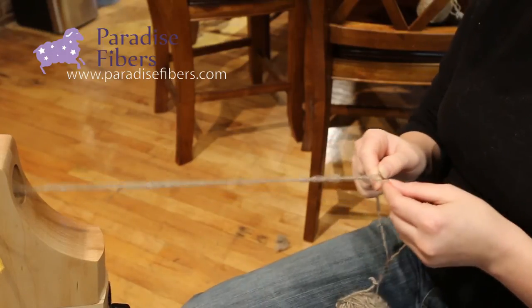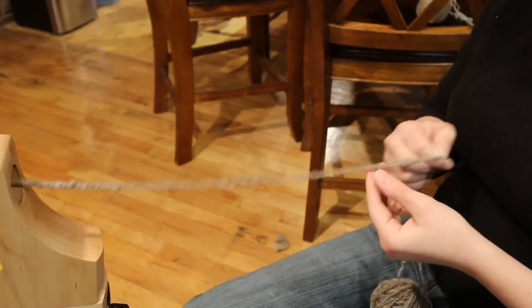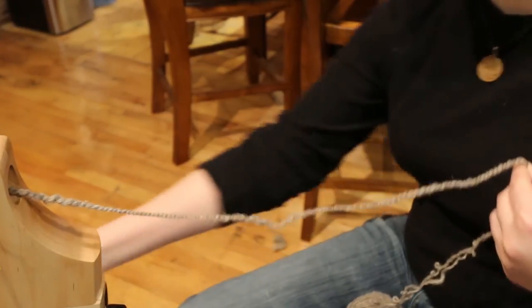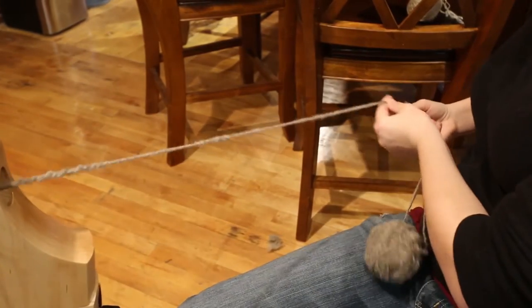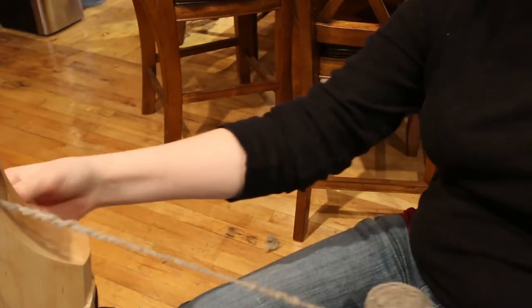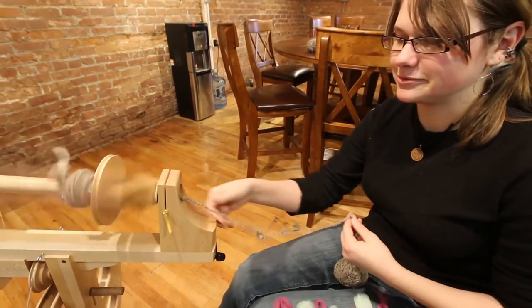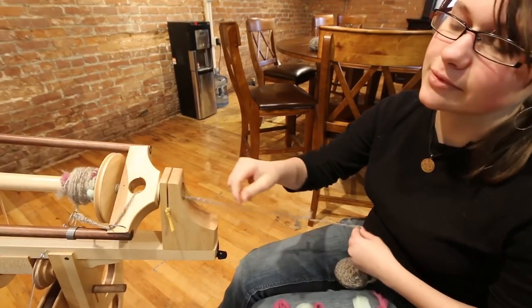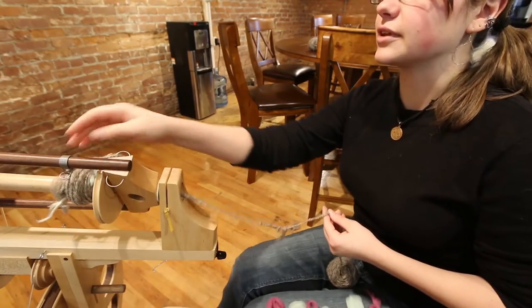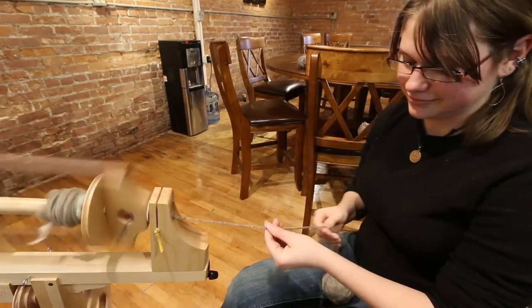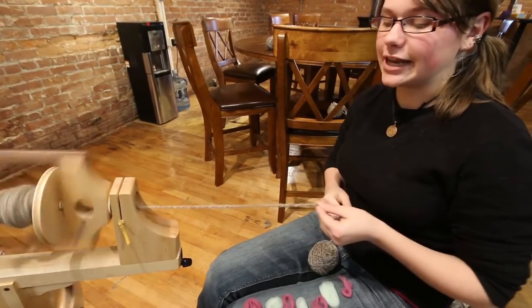Then you go back to regular plying. You might have over-spun a little bit if you're treadling too fast, but that's not a problem—just let your hands scoot the twist down. I have to pick up the tension a bit; I was caught, which can happen, so be careful.